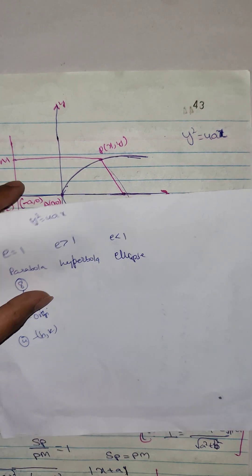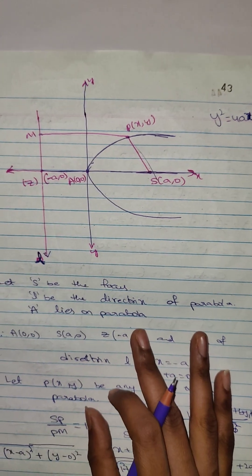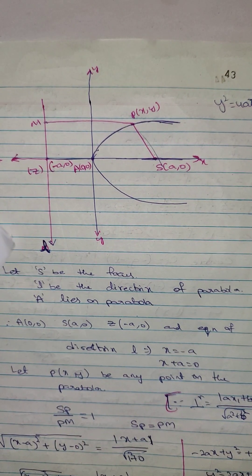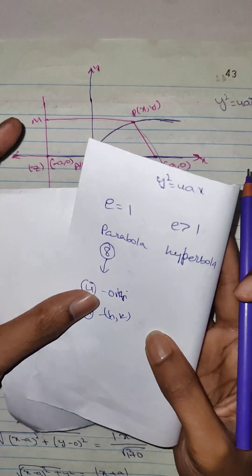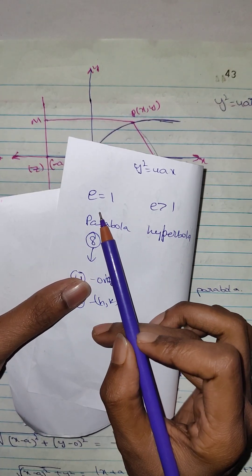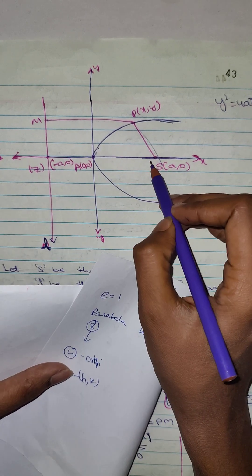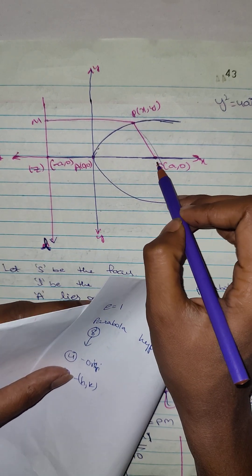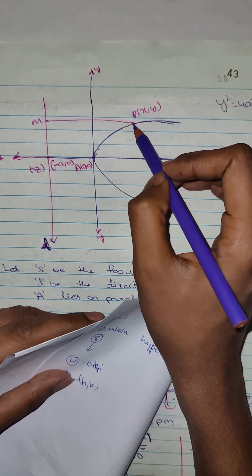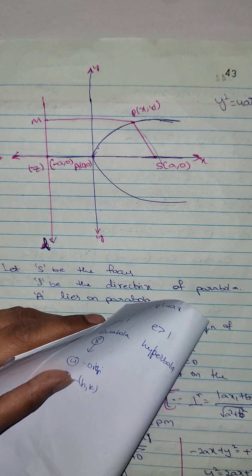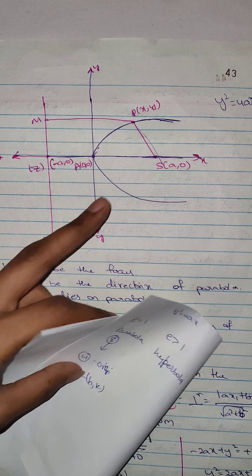Coming to the theorem, let me explain the terminologies. E is nothing but eccentricity. Eccentricity is the ratio of the shortest distance from the focus to a point, to the distance from that point to the directrix.